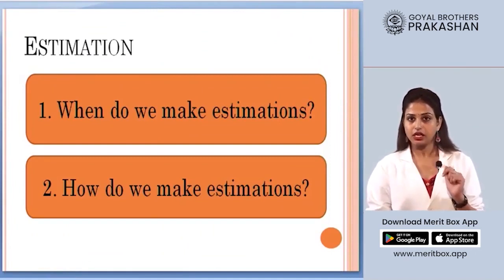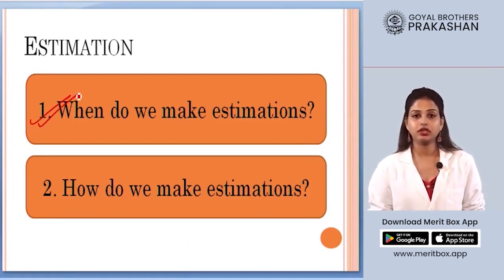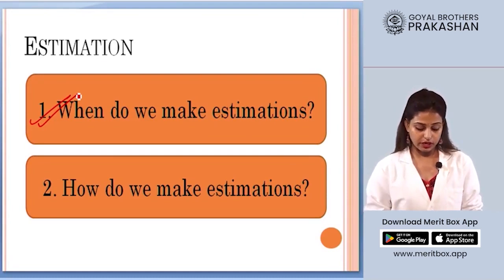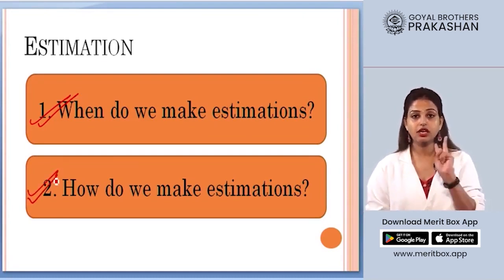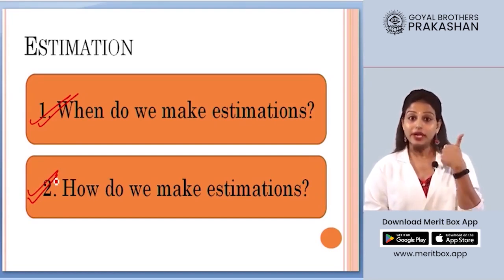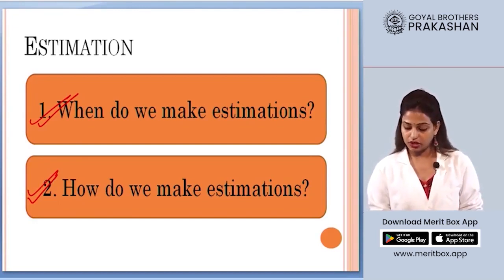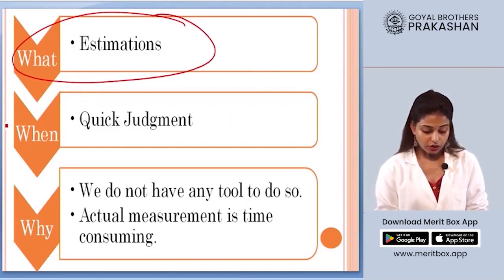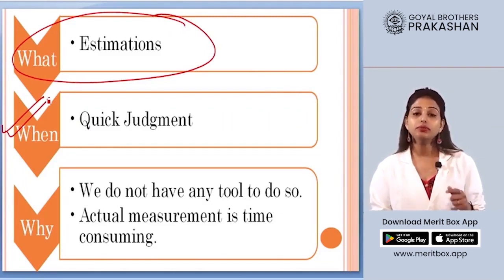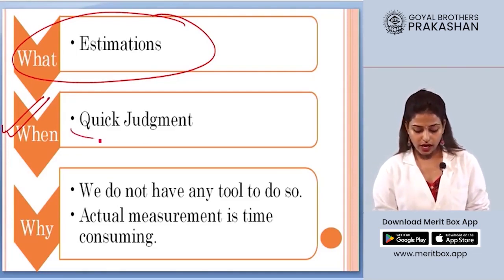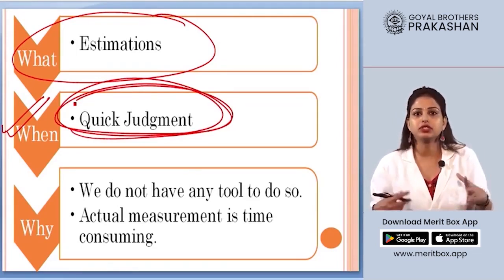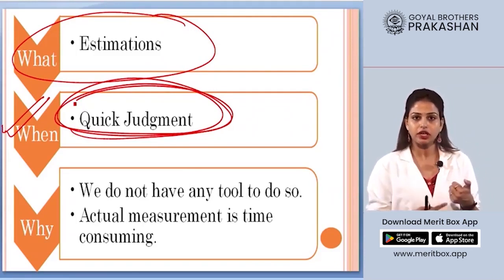Estimation comes with two important questions: when do we make estimation, and how do we make estimation? The first question — when to make estimation — you make estimation in two cases. One is when you have to make a quick judgment. For example, if I ask you quickly how many marbles could be in the jar, you might say 75. You cannot just sit and count each marble — that takes too long.